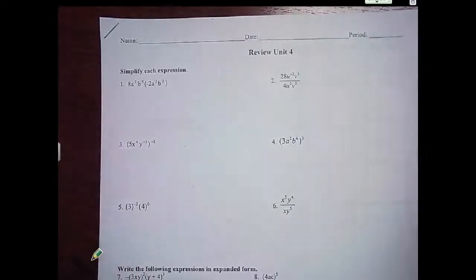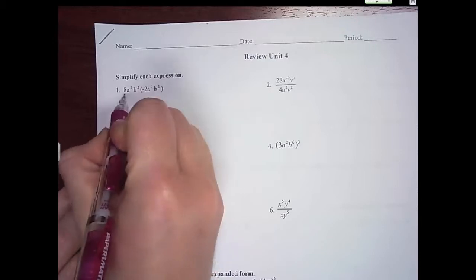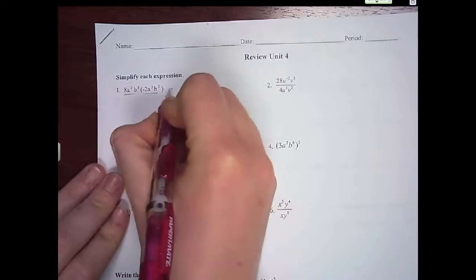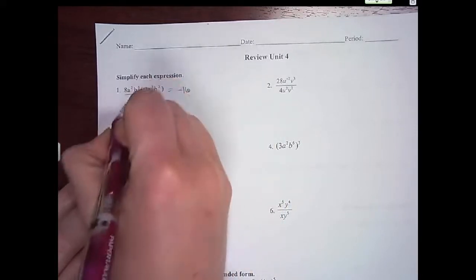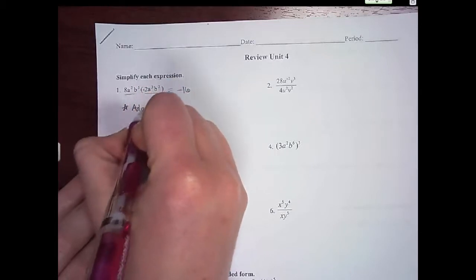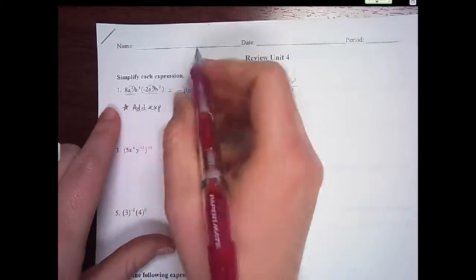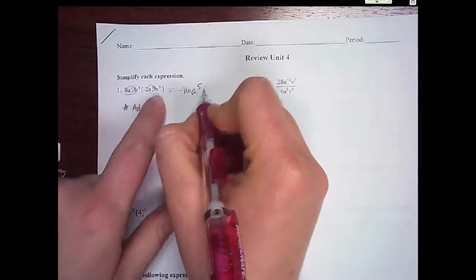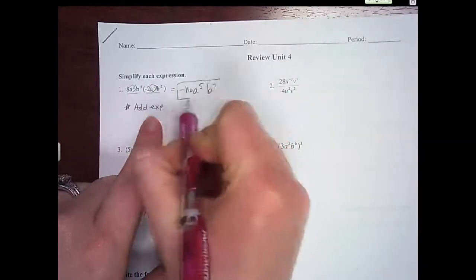Alright guys, so this is for the test tomorrow. Let's go over some of these. Here, this is our exponent property, so I have a monomial times a monomial. I'm going to multiply the numbers first, which would give me negative 16. In this case, I'm going to add the exponents. So a² and a³ would give me a⁵, and b⁵ and b² would give me b⁷. That's my answer.